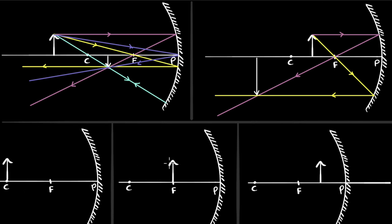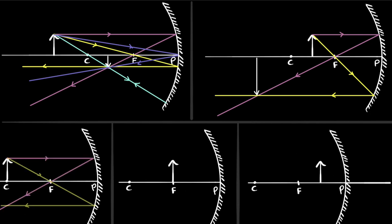Now let's go to the case where the object is at C. Again, the first ray I'm going to draw parallel to the principal axis — this passes through the focus. The second ray I'll draw through the focus; it goes parallel to the principal axis. You can see the two rays meet right beneath the center of curvature. This means our image is at C when the object is at C — same size, inverted, which means it's real.